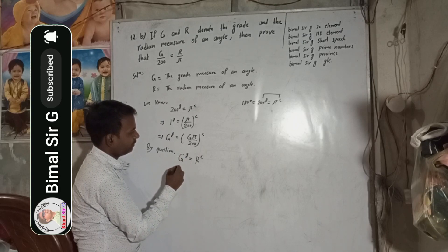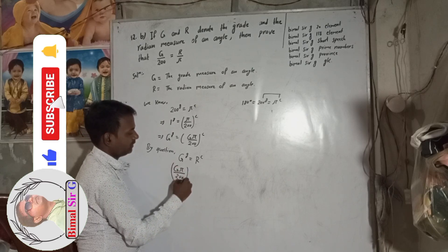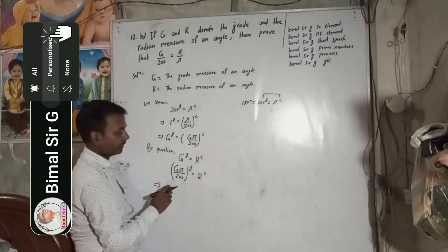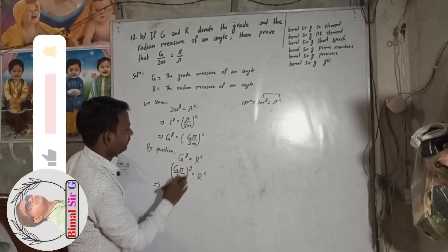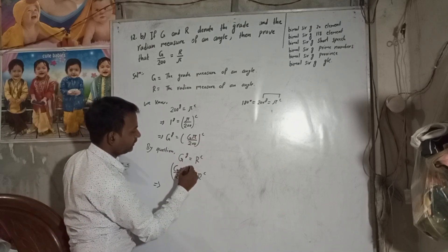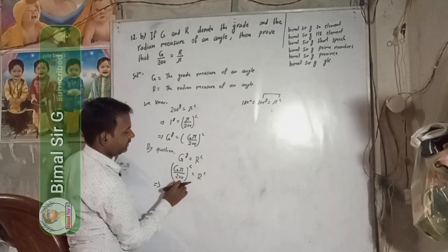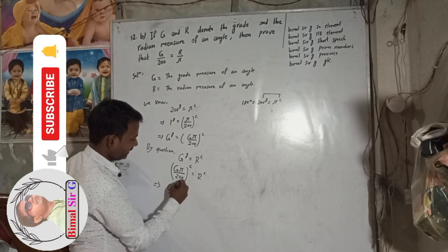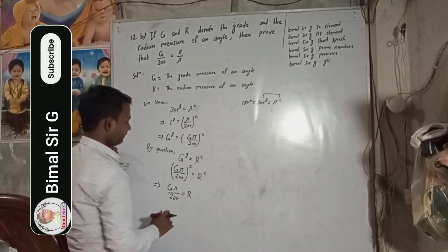Now, in place of G grade, we have to substitute this value. So G pi by 200 grade is equal to R radian. Sorry, in place of G grade, G pi by 200, this is the relation, and this R radian as it is. Now, we see here, this is the relation. We can write what? We can just write, this is equal to R. That means G pi by 200 is equal to R.